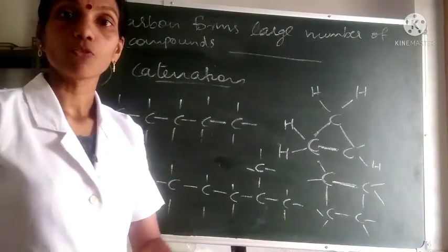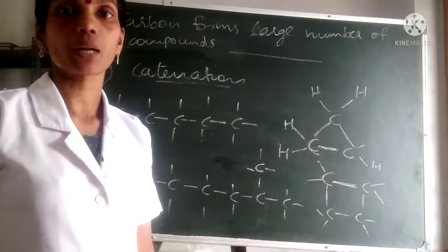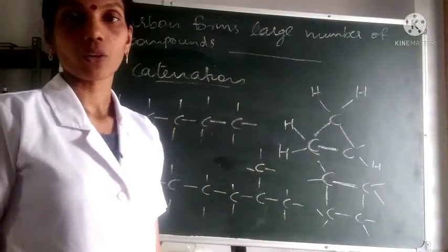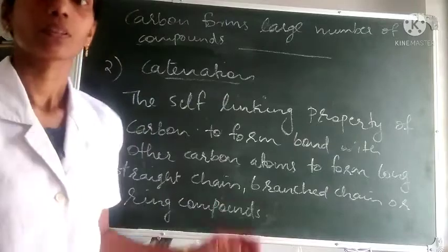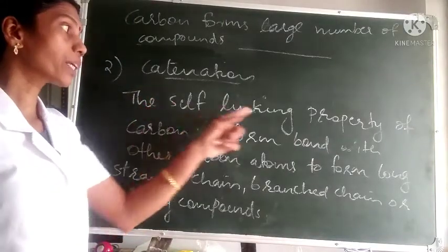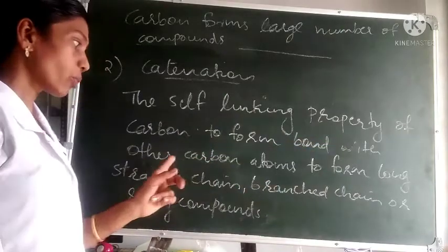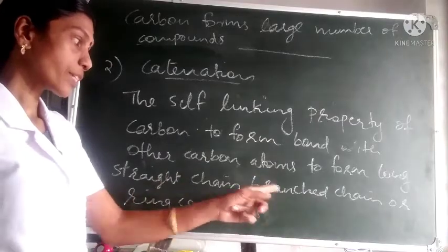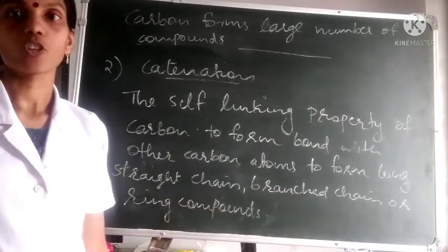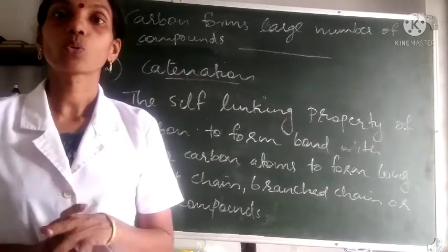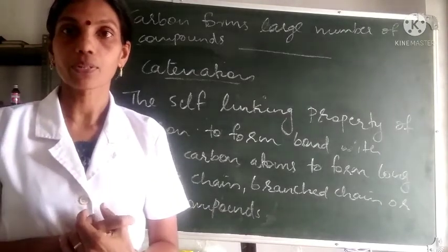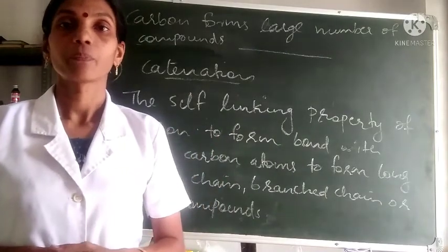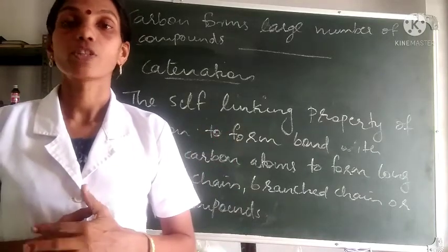Catenation can be defined as the self-linking property of carbon to form covalent bonds with other carbon atoms, forming long straight chain compounds, branched chain compounds, or ring compounds. So these are the two reasons for the formation of a large number of carbon compounds: first, the tetravalent nature of carbon; second, catenation. Study this and write these two points in your notebook.